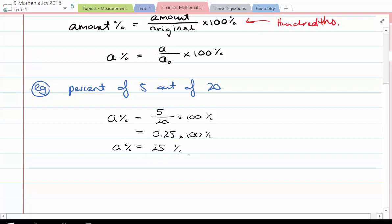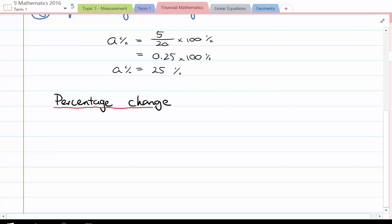So percentage of 5 out of 20 will end up being 25%. Now when we look at percentage change, the only difference here is we're looking at the change in amount as a percentage. Really what we're looking at here is percentage change will be the change in the amount over the original amount and multiplied by 100%.